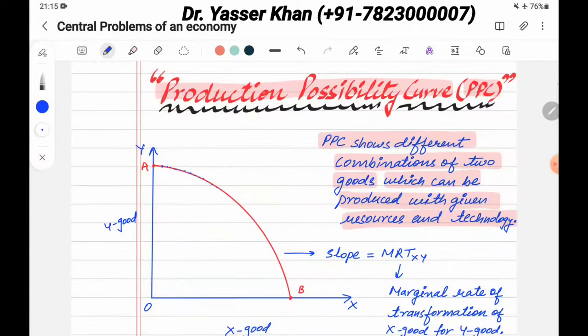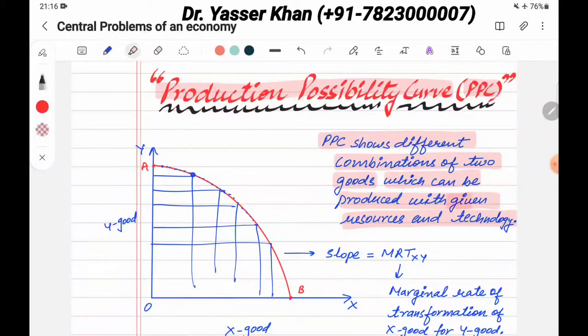What is the production possibility curve? What is the combination of different points that you show? Every point shows X good and Y good. All these combinations show X good and Y good, which you can create with given resources and technology.